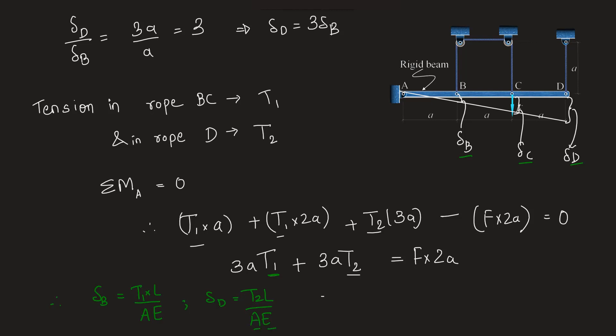So from here we will get the relationship between T1 and T2 as delta D is 3 times delta B. Therefore we can substitute it over here. So if we take the ratio delta D upon delta B, this will be equal to 3, which will be equal to - we will have to take the ratios of the right hand side as well. So this will be T2 upon T1, and therefore we have T2 is equal to 3 times T1.